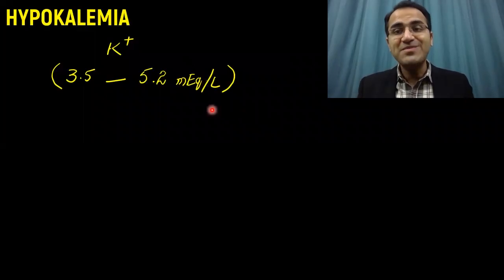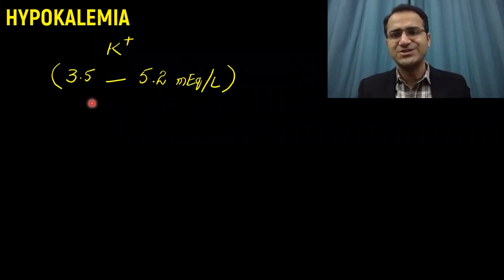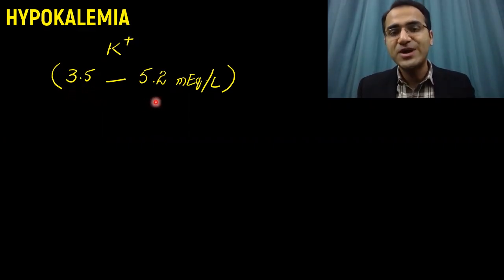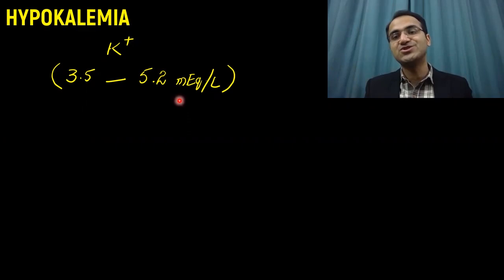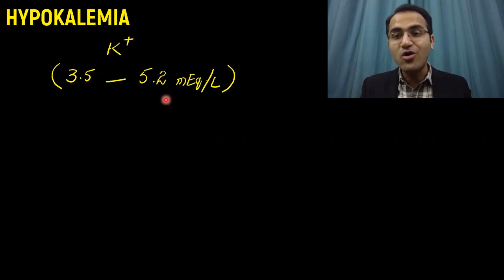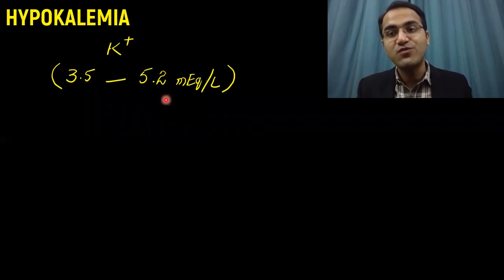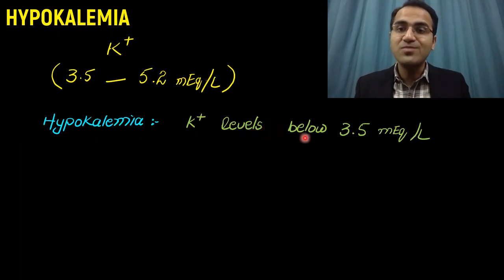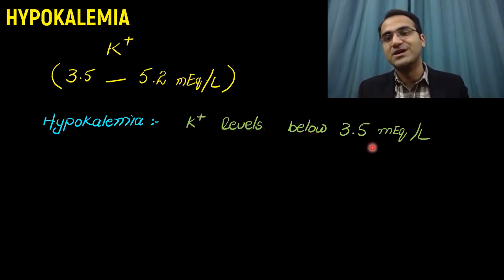The body maintains potassium within a strict normal range of 3.5 to 5.2 mEq per liter. Potassium is a very important component for all biochemical functions in the body. Hypokalemia is considered when potassium levels fall below 3.5 mEq.